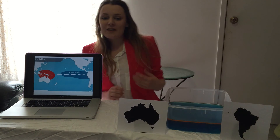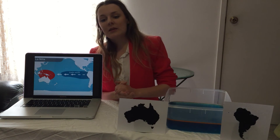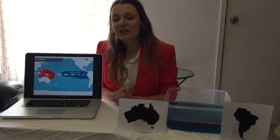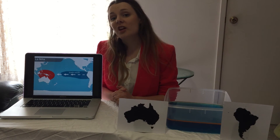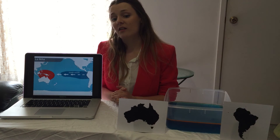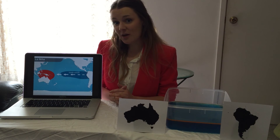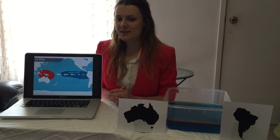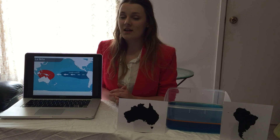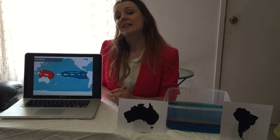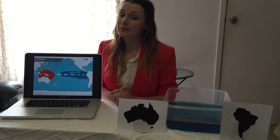In the La Niña phase, Australia will experience wetter conditions, more frequent tropical cyclones and east coast lows. The 2007 Pasha Bolka storm is an example of this and occurred during a particularly strong La Niña event.